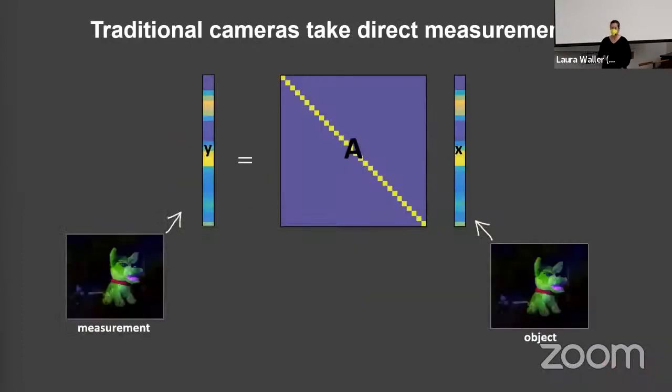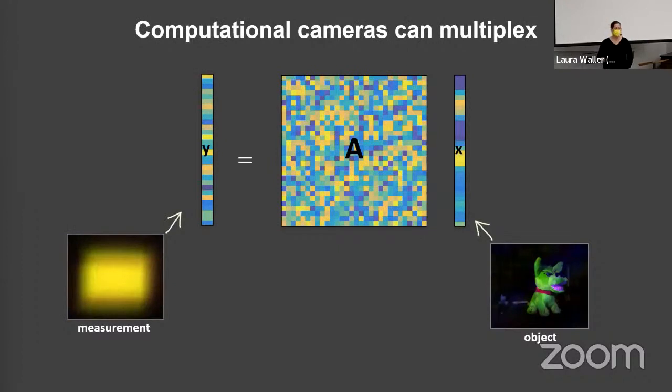That means I can write it as a linear matrix. Here I have the measurement Y of the scene X is mapped by this A matrix. Basically, we call this the forward model or the system model. In a regular camera, you're trying to make an A matrix that's as close as possible to the identity matrix as you can. With a computational camera, who cares if it's the identity matrix? As long as it's known and invertible, then I can solve this problem.